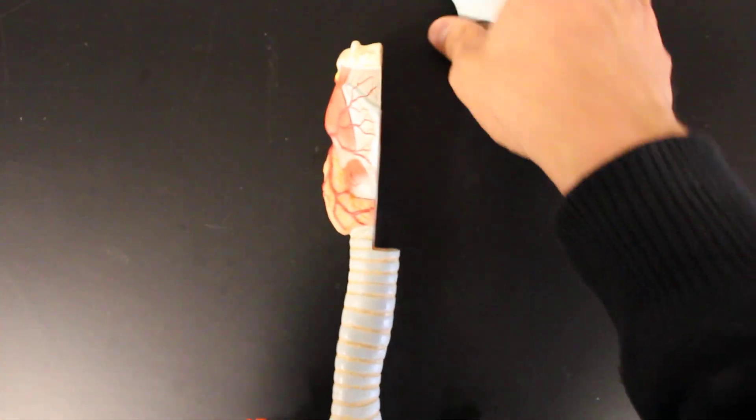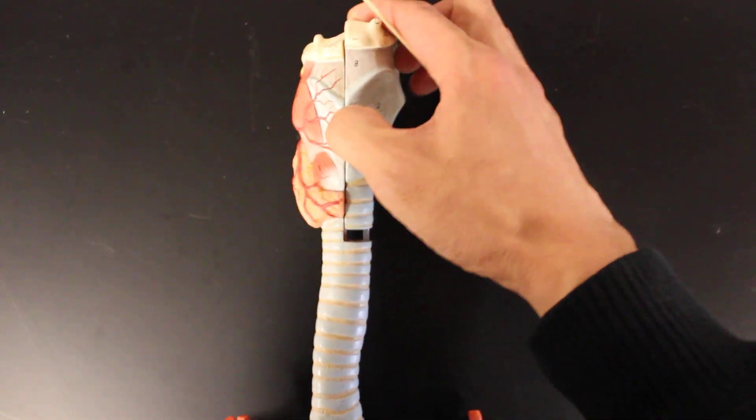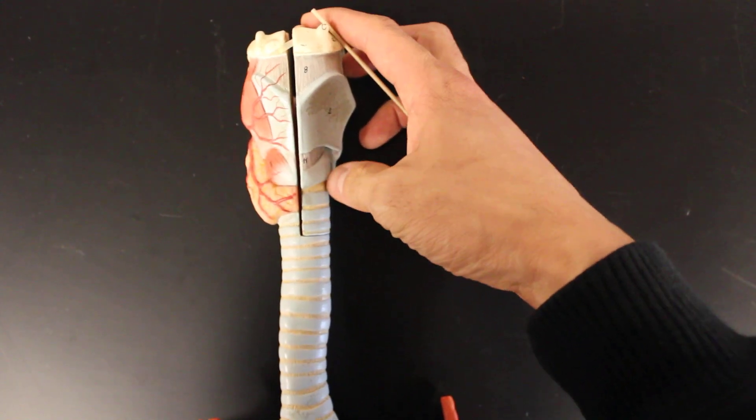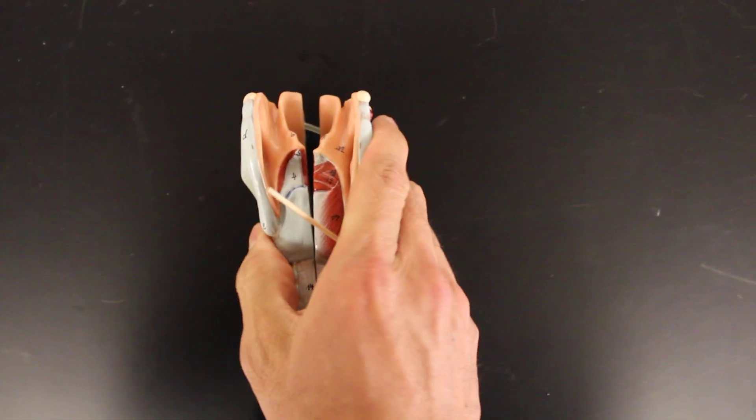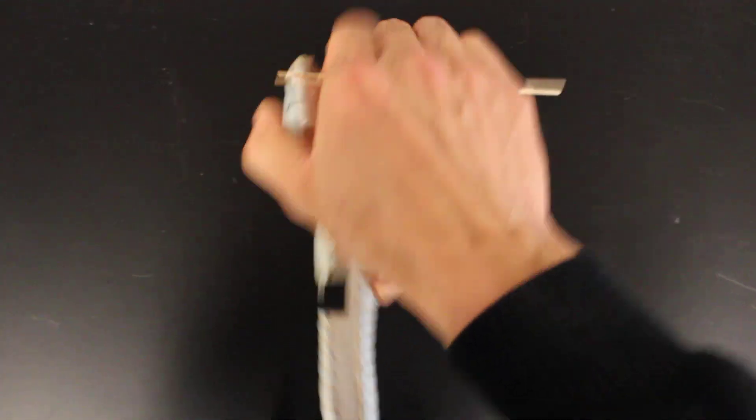So let's just walk through again what we find in here. We find the larynx having the five different type of cartilages. Larynx. So this would be the thyroid cartilage, cricoid cartilage. Behind it would be the arytenoid cartilage, corniculate cartilage, and of course the epiglottis.